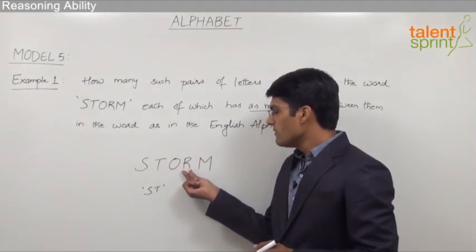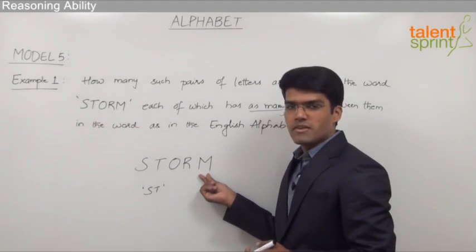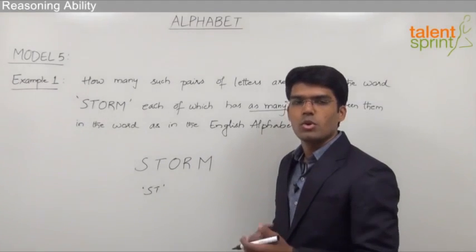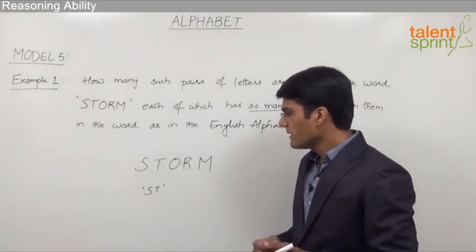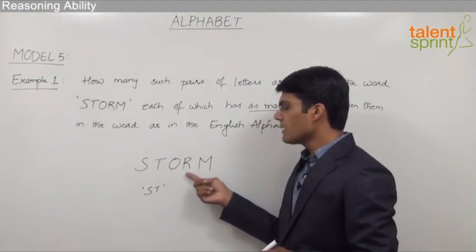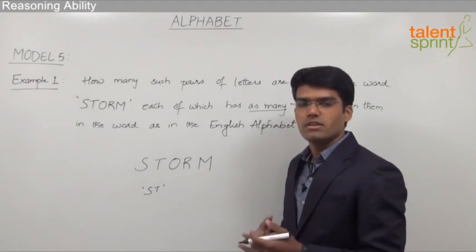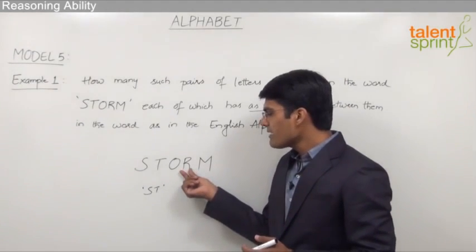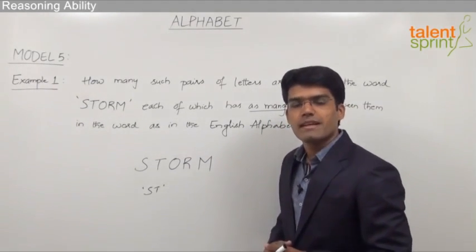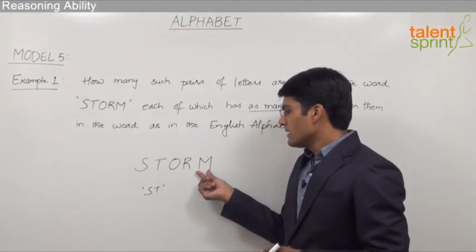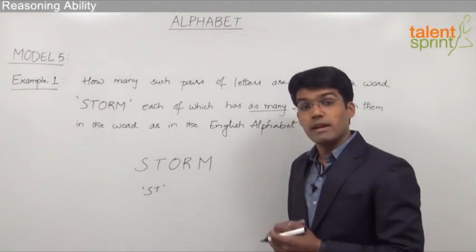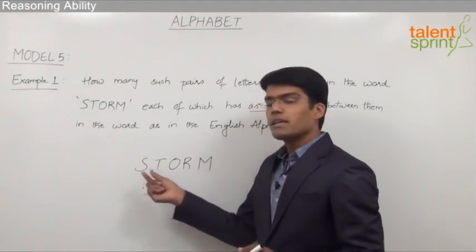Moving on to the letter T, reading the English alphabet from T: T, U, V, W — there is nothing which matches with T in the given word. So there is no correct pair with T. Now taking the third letter O, reading from O: O, P, Q — none of them match with the given letters. So there is no possible pair with O when checking forward.